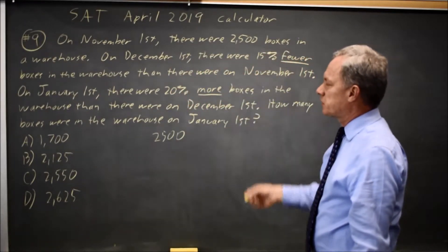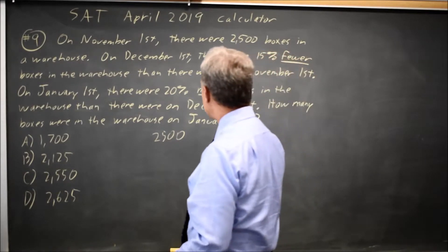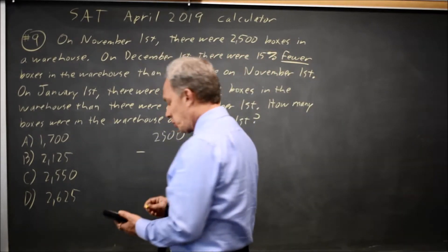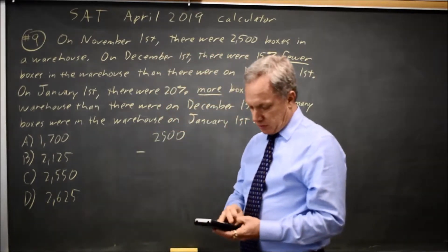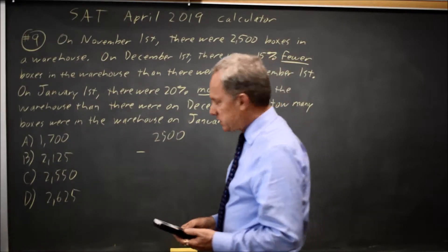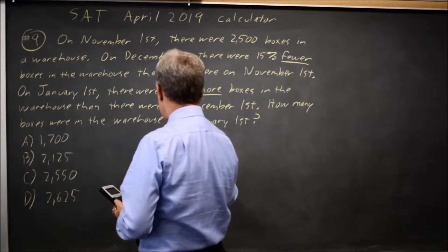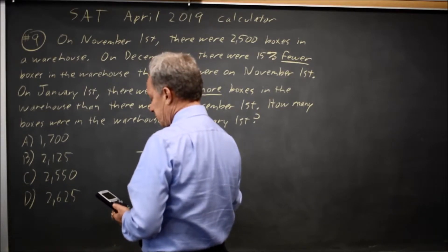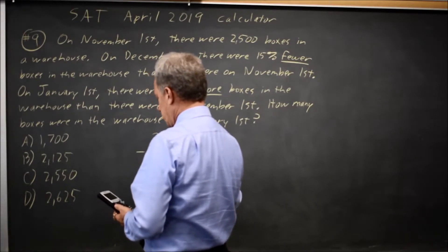In December there are 15% fewer. So minus 0.15 times 2500 is minus 375, which leaves us 2125.